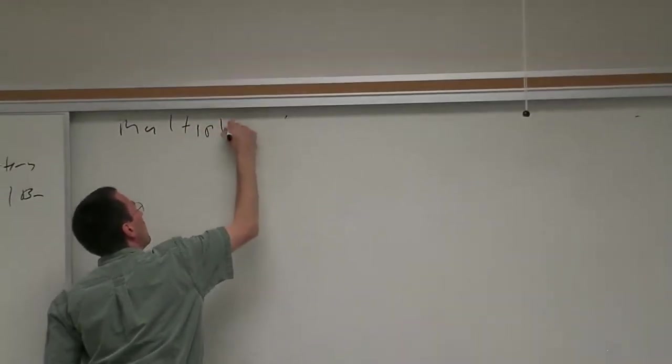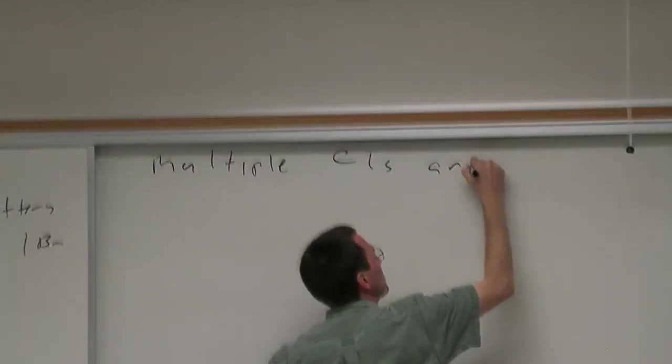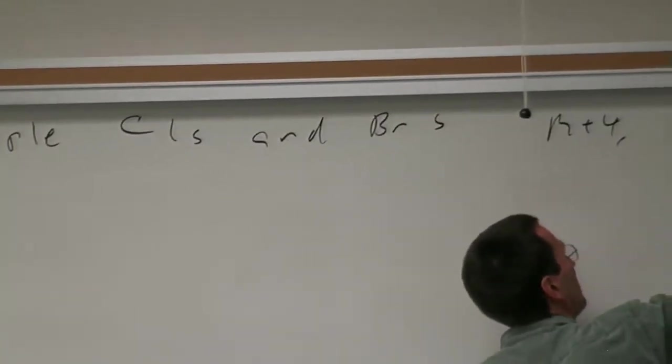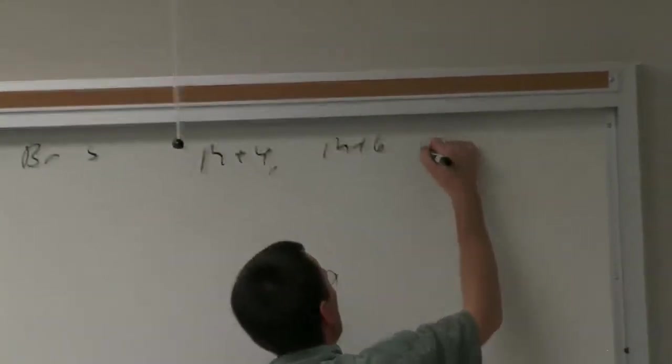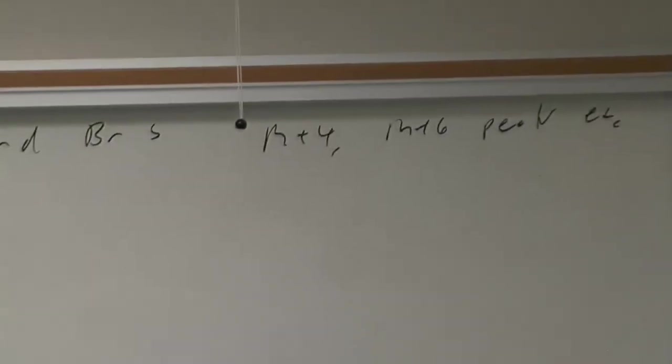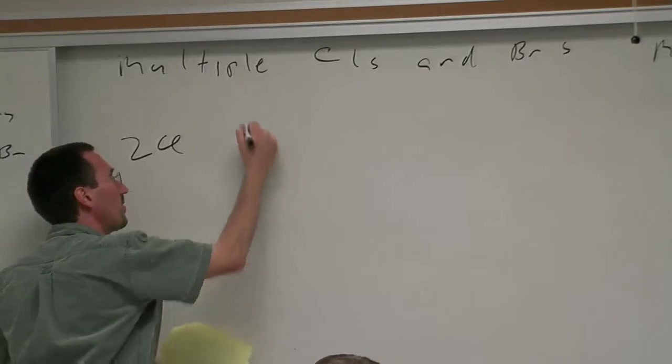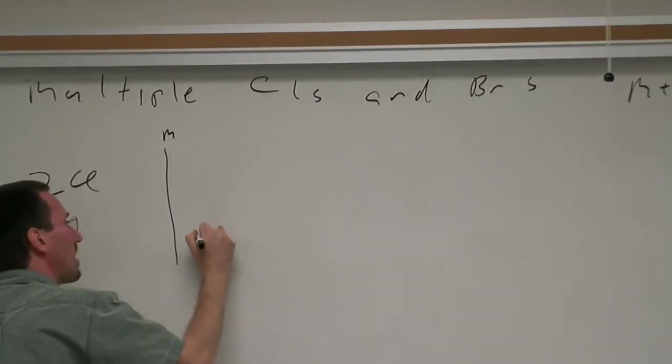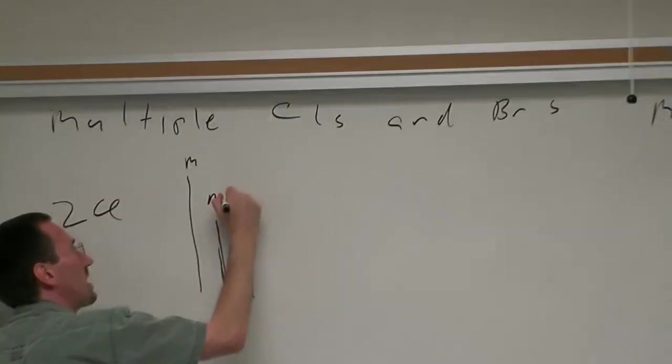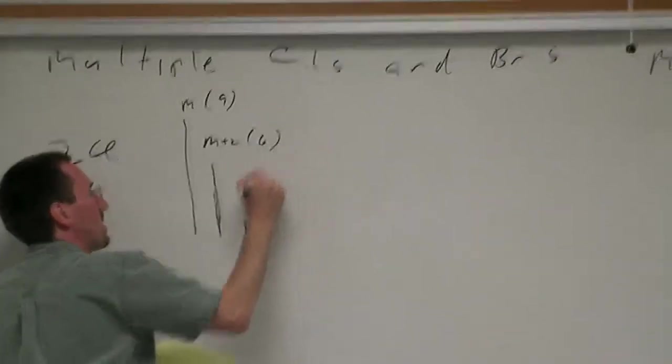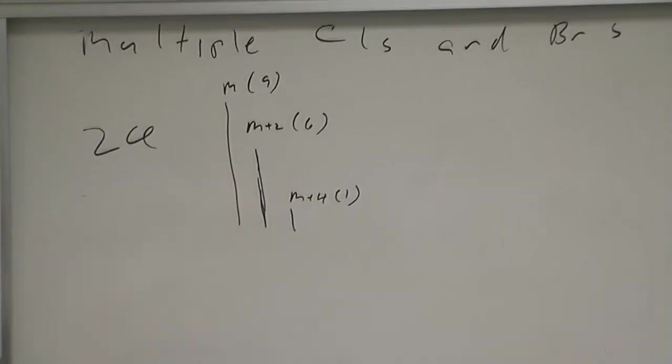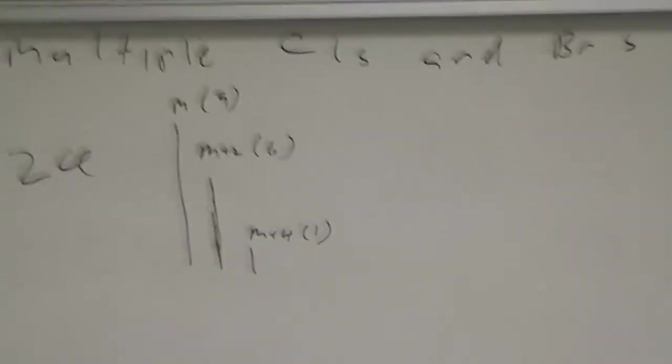If you have multiple chlorines and bromines, you can have M plus 4, M plus 6 peaks, et cetera. For example, if you have two chlorines in a molecule, you'll see a peak and then another peak at M plus 2 that's about two-thirds of the height and then a peak at M plus 4. We'll call this 9 to 6 to 1.